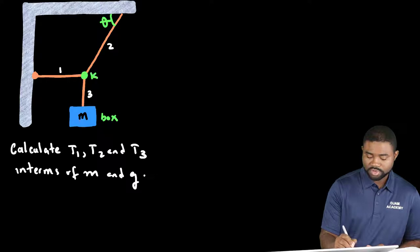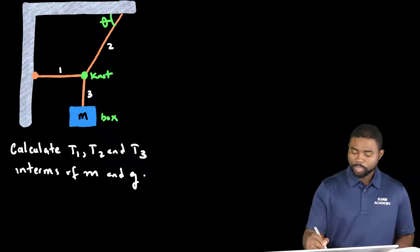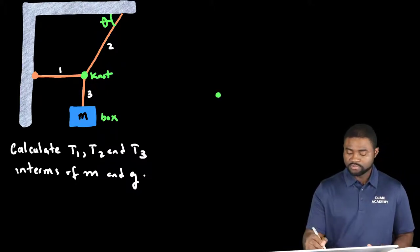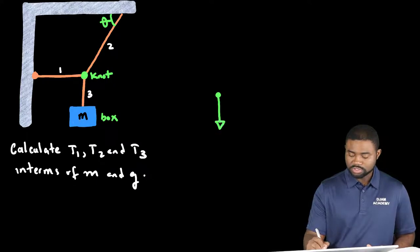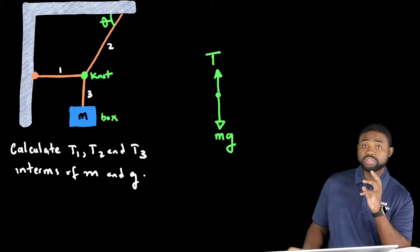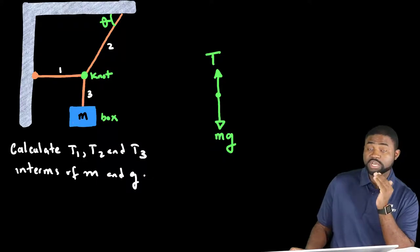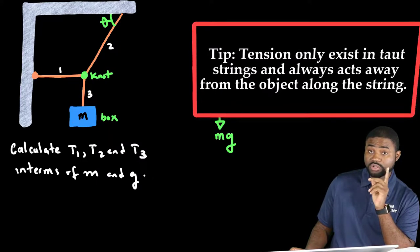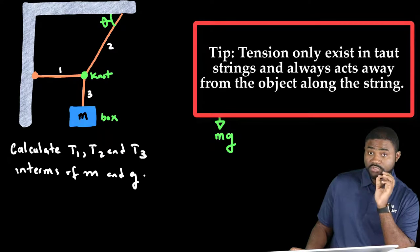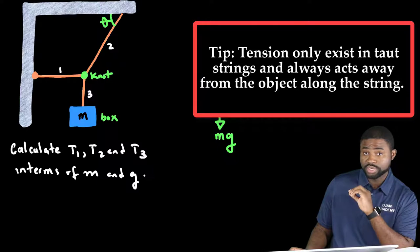This is our knot, so we will have two free body diagrams. The first free body diagram will be of the box. So this is just M, G, and this will be T3. The trick about tension is this: Always remember, tension always acts away from the object along the string.